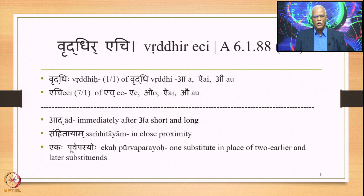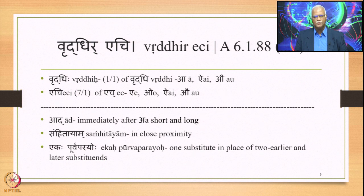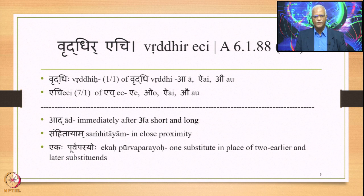Ech is a Pratyahara consisting of four sounds: E, O, Ai, and Au. It captures the third and fourth sutras in the Pratyahara sutras: Ayung, Ruluk, Eong, I, O. So Echi means 'immediately before E, O, Ai, and Au.' The other words continued in this sutra are Aad (5/1 of A), meaning immediately after short or long A, and Samhitayam, meaning in close proximity — in the Samhita mode.